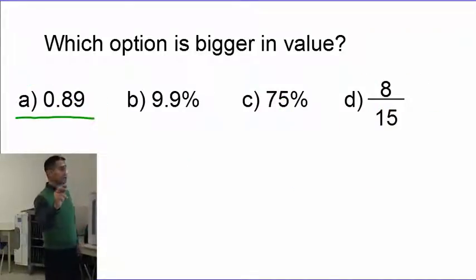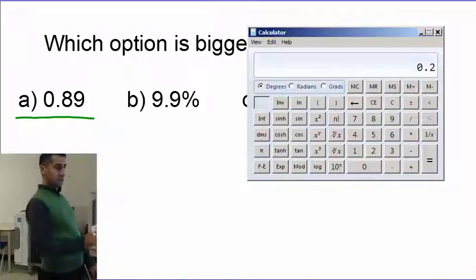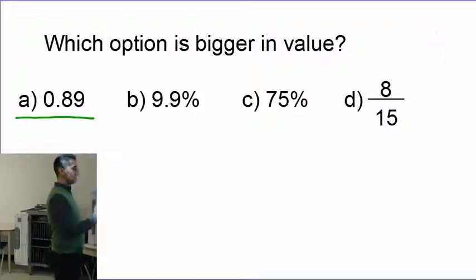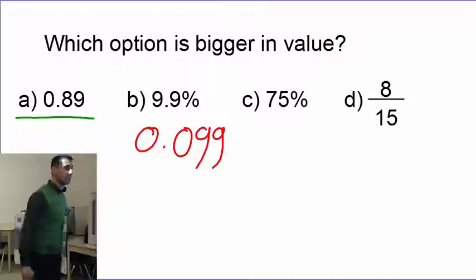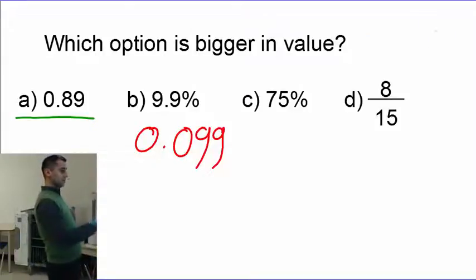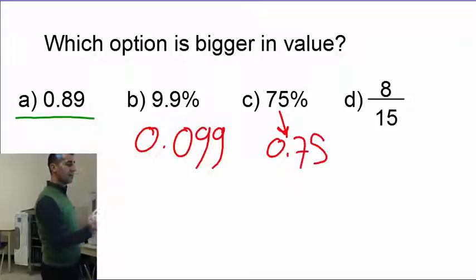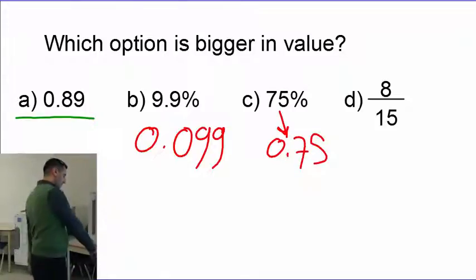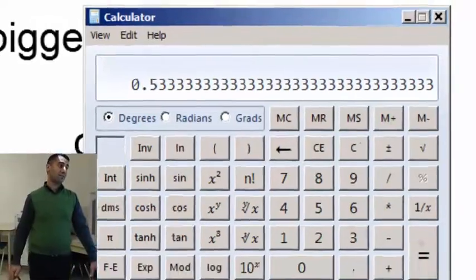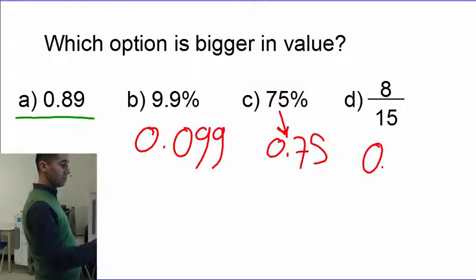Next example — this one is already decimal, so I have to turn the rest into decimals. 9.9 percent means 9.9 divided by 100, which is 0.099 — I'll write down 0.099. How about C, 75 percent? Let's calculate that — 75 percent is 0.75. Last but not least, 8 over 15 — let's calculate: 8 over 15 gives me 0.53333. I'll write down 0.53.